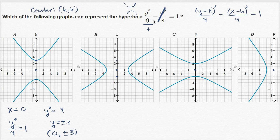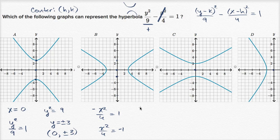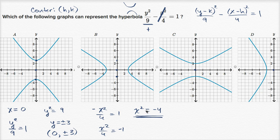If we did it the other way and set the y term equal to zero — making y equal to the y-coordinate of the center — we'd get negative x squared over four equals one, or x squared over four equals negative one, or x squared equals negative four. That has no solution, which is why y is never equal to zero on this hyperbola. In choices B and D, there are points where y equals zero, so those are ruled out.